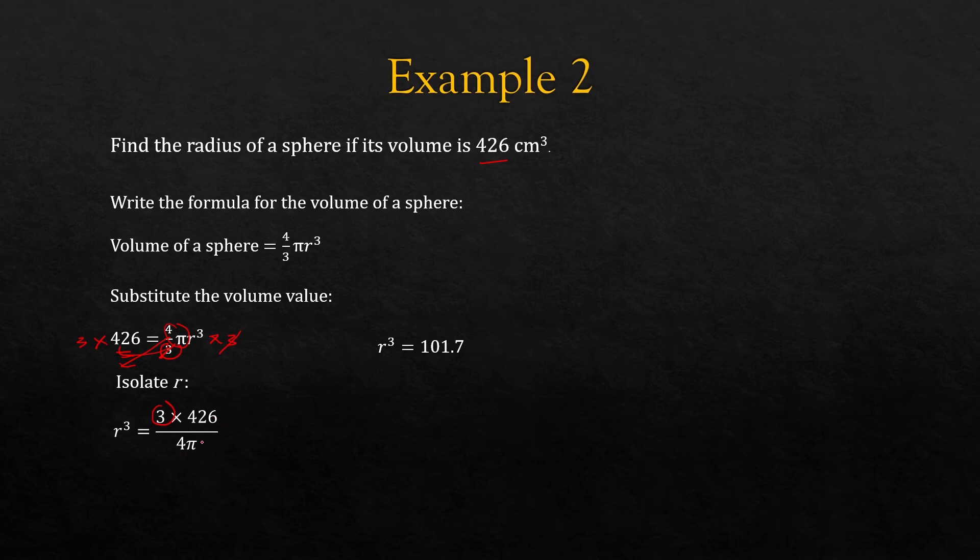So we calculate this in your calculator. You'll get 101.7 which is equal to r cubed. To cancel a cube, we take the cube root of both sides.